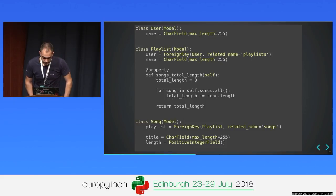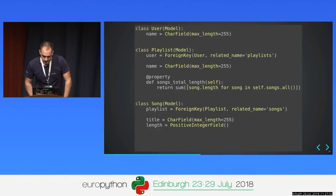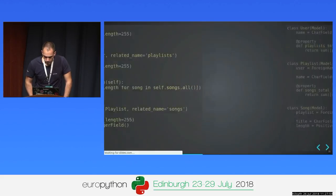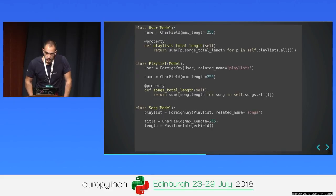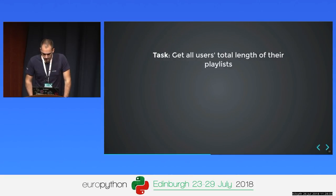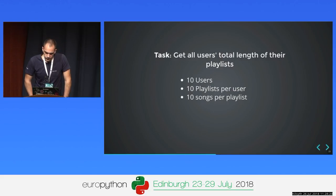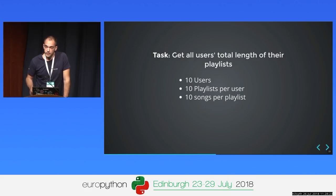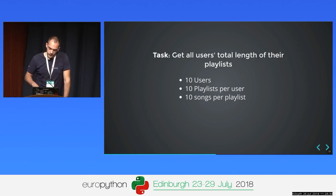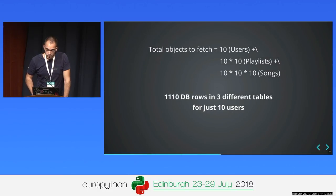So we implement a property in the playlist model that calculates the sum of all song lengths using a Python list comprehension. We do the same for the user model — get all playlists and sum their lengths. The problem with this code is that if you want to get all users with the total length of all their playlists, and we have 10 users, each with 10 playlists, each with 10 songs, we need to fetch 1,110 database rows just to calculate the length for 10 users.